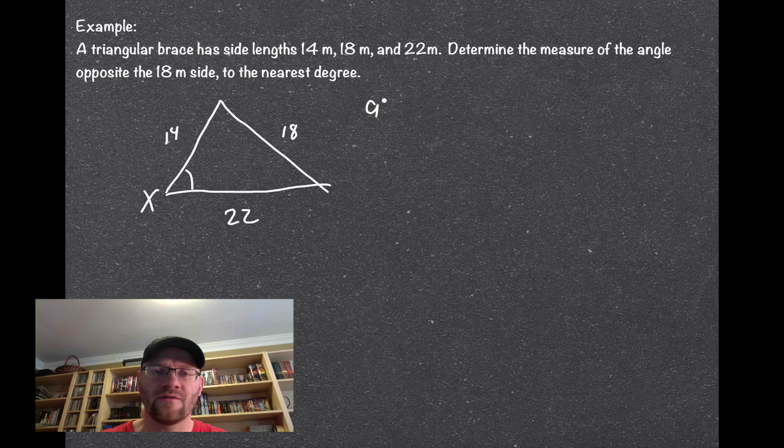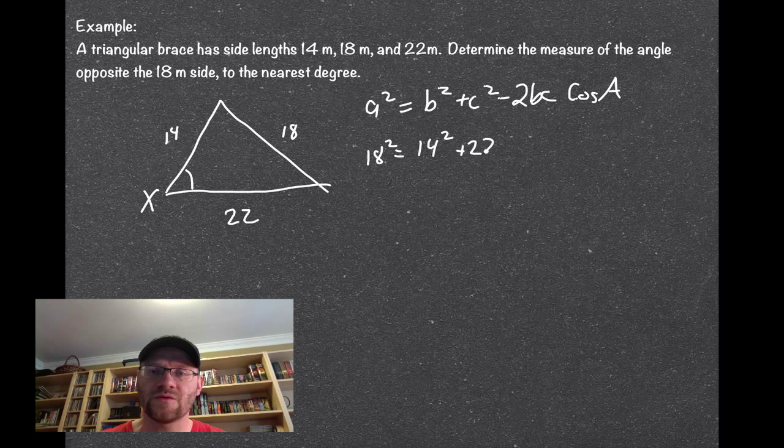So the law of cosines that we developed says a squared equals b squared plus c squared minus 2bc cosine a, and the big thing about this is that the side that you're looking for, or the angle that you're looking for, are always on opposite side of the equations. So since I'm looking for angle X, I am going to put the side opposite angle X on the left hand side. So that makes that 18 squared. It means the other two sides are 14 squared plus 22 squared, and it doesn't matter what order those go in, because you're just squaring them and adding them. And then we get 2 times 14 times 22, cosine of this angle that we don't know.